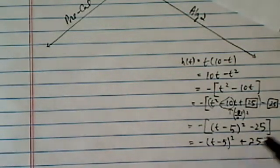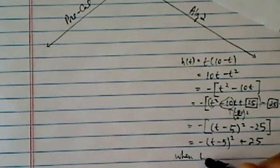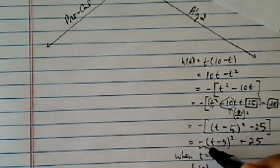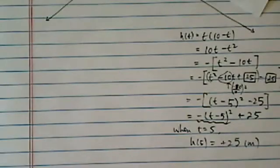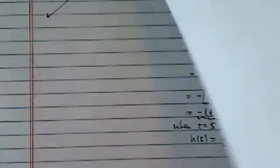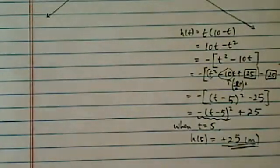So you can see that when t equal to 5, height at t equal to 5 is equal to positive 25, because this negative goes away, and we're in meters. So maximum height is 25 meters. Okay, now let's talk about the other method.